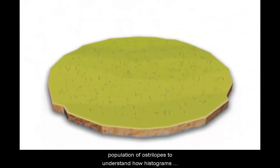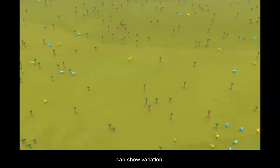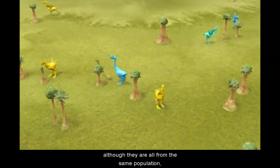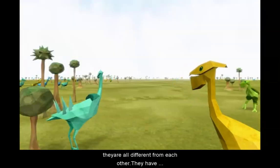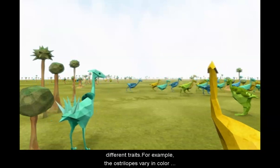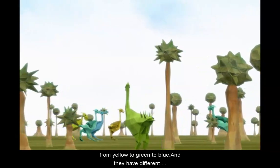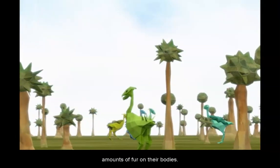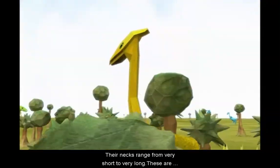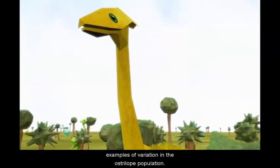Let's look at a population of ostrilopes to understand how histograms can show variation. If you look at the ostrilopes, you can see that although they are all from the same population, they are all different from each other. They have different traits. For example, the ostrilopes vary in color from yellow to green to blue, and they have different amounts of fur on their bodies. Their necks range from very short to very long. These are examples of variation in the ostrilope population.